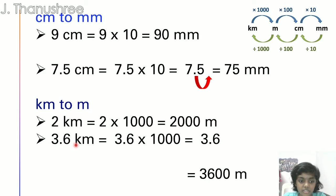3.6km equals to 3.6 times 1000. So we are going to move the decimal point three times because there are three zeros in 1000. 1, 2, 3. So the final answer is 3600m.